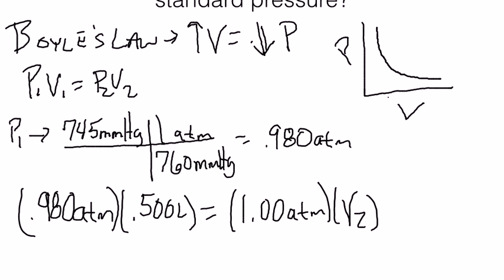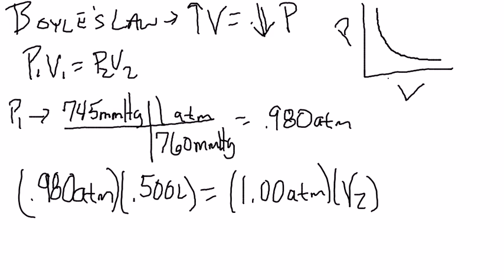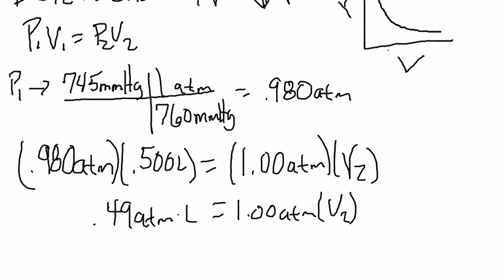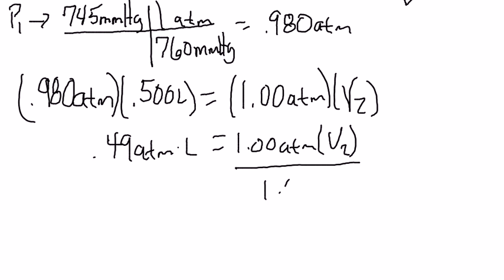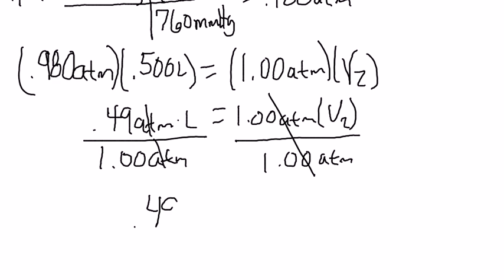So let's combine the terms on the left side of the equation by multiplying 0.98 by 0.5. It's approximately half of 0.98, which is 0.49 atmospheres liters, is equal to 1.00 atmospheres times V2. All we have to do now is divide one atmosphere to both sides. That cancels, and divide this by one atmosphere. Obviously that divided by one is just itself, and so we get 0.49 liters is equal to V2.